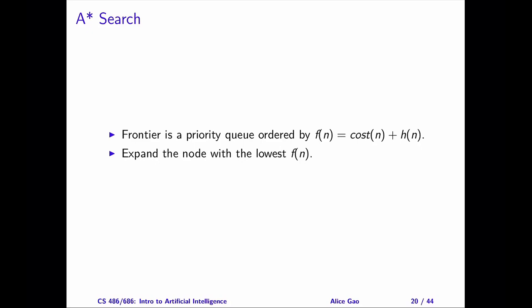A-star search implements a frontier as a priority queue, ordered by the value f of n. n is a current node, and f of n is the sum of the cost value of n and the heuristic value of n.